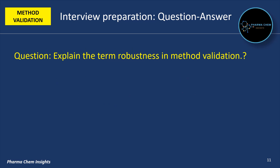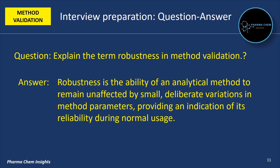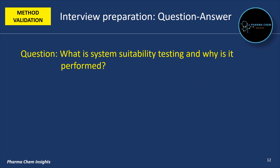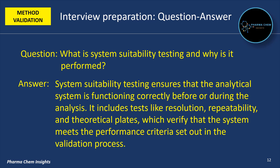Next question: explain the term robustness in method validation. Robustness is the ability of an analytical method to remain unaffected by small deliberate variations in method parameters, providing an indication of its reliability during normal usage. Next question: what is system suitability testing and why is it performed? System suitability testing ensures that the analytical system is functioning correctly before or during the analysis. It includes tests like resolution, repeatability and theoretical plates, which verify that the system meets the performance criteria set out in the validation process.